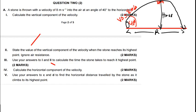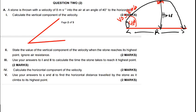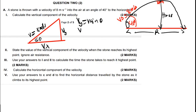We have the X component and the Y component. The angle is 40 degrees and the velocity is 8 meters per second. VX is the horizontal component and VY is the vertical component. We want to find the vertical component, which — same as under vectors — VY equals V sin theta. So VY equals 8 sin 40, which gives 5.14 meters per second. That is the vertical component of the velocity.